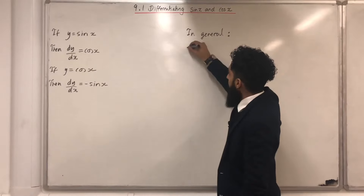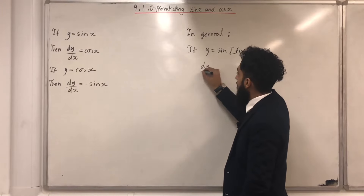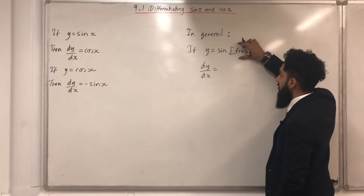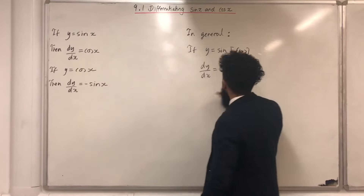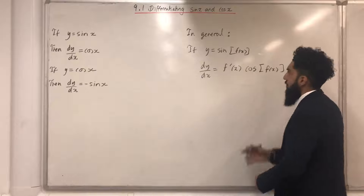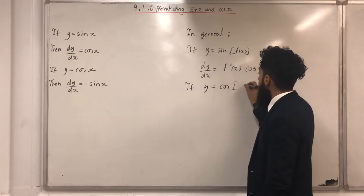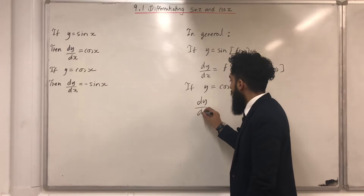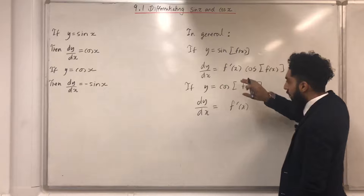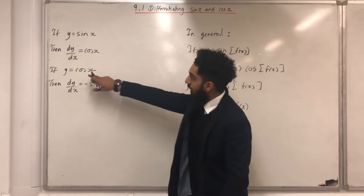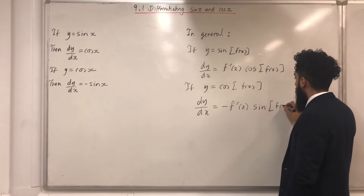In general, if y equals Sine of any function f of x, then dy/dx equals f dash of x multiplied by Cos in square brackets f of x. Also, if y equals Cos of any function f of x, then dy/dx equals negative f dash of x multiplied by Sine in square brackets f of x, since Cos differentiates to a minus Sine.